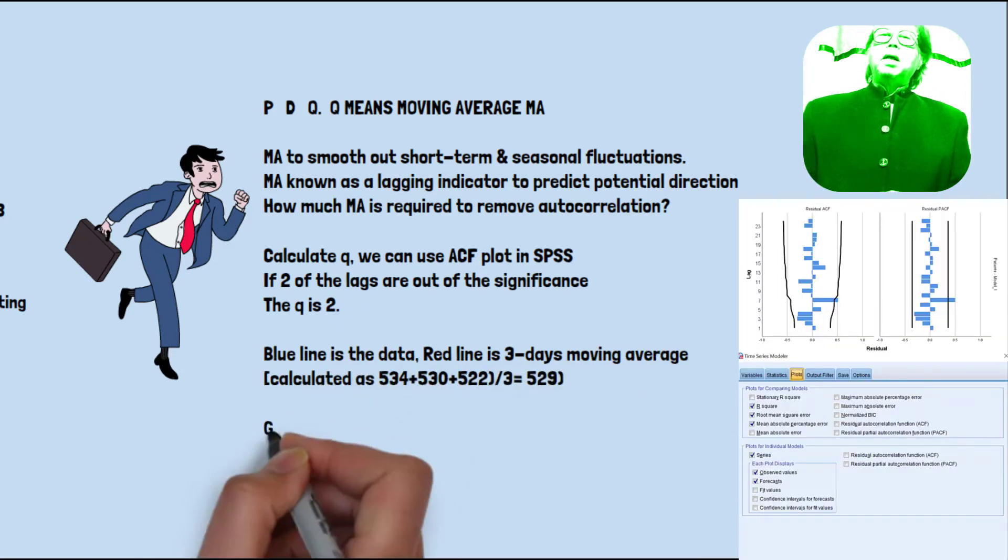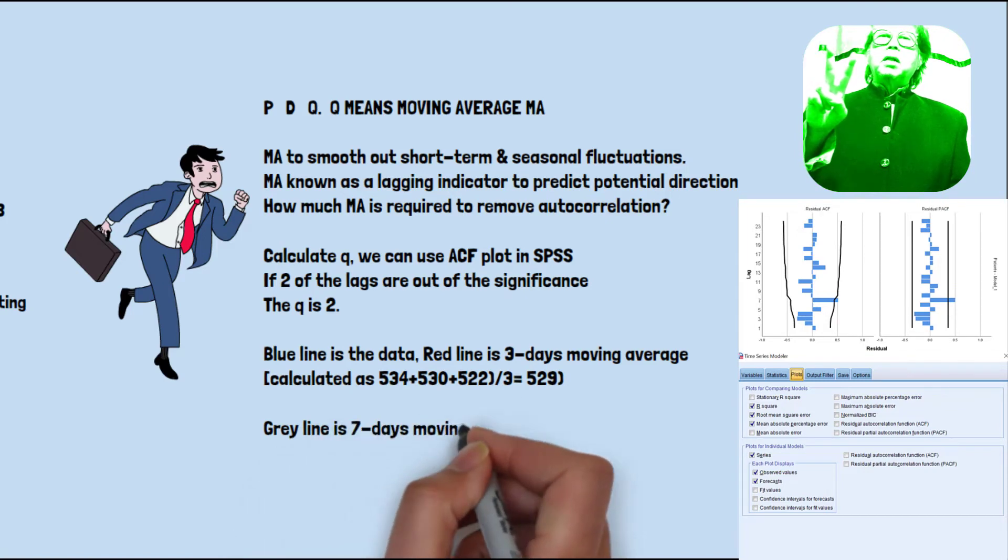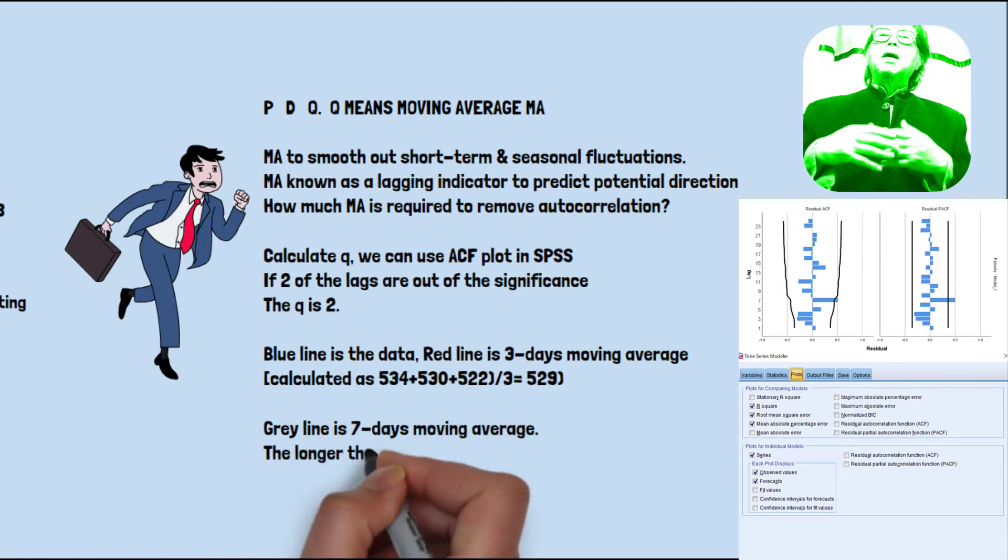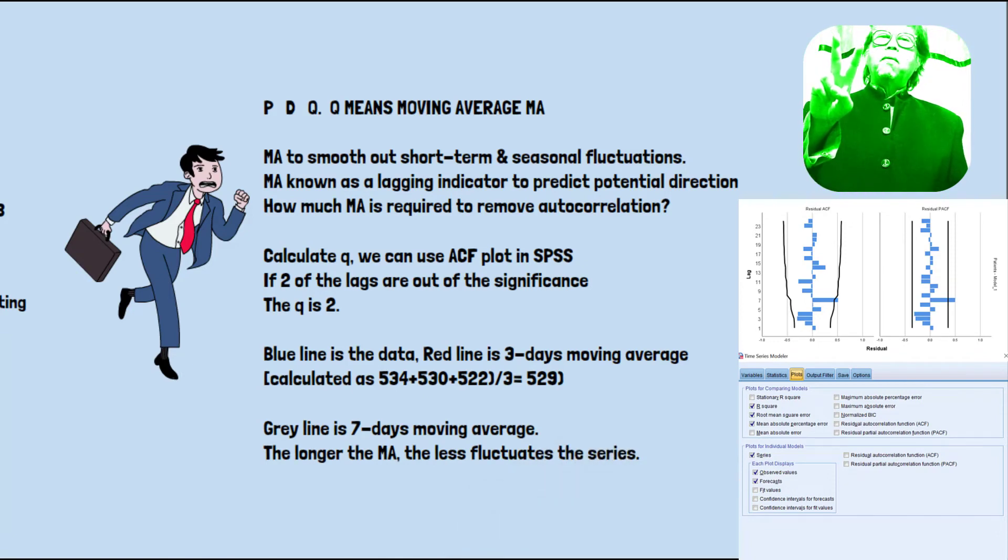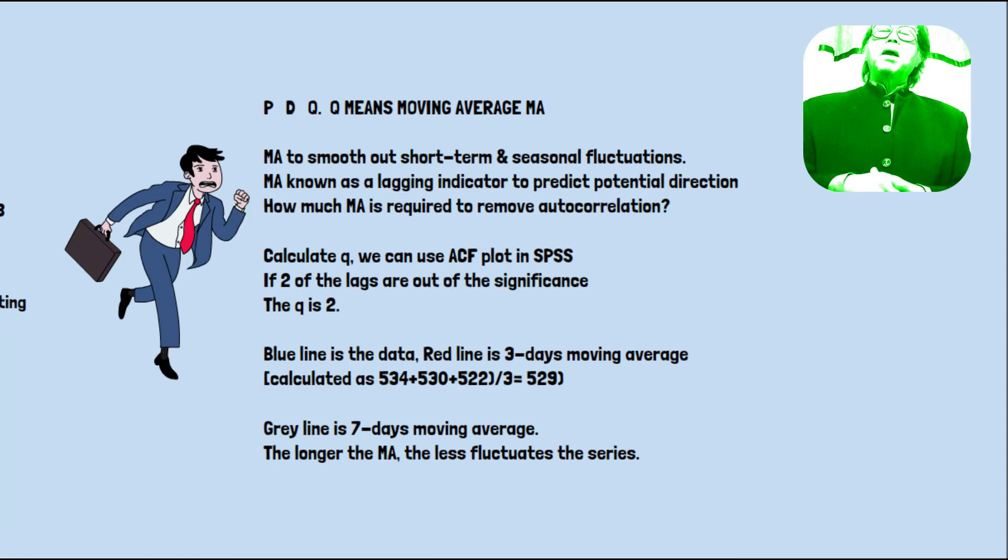For example, if after lag 2 is not significant, we can say that Q is 2. We take 2 days moving average, or 2 months moving average, or 2 years moving average in the daytime. This is calculated as whether 2 days, 3 days, or 4 days divided by average. So the longer the moving average, the less fluctuates the series.